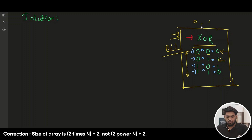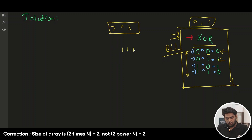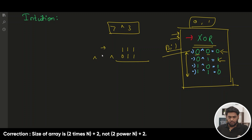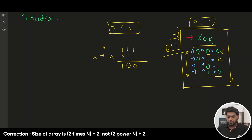Whenever you have same numbers it is actually 0, and whenever you have different numbers it is 1. We are talking in terms of bits. For example, if we have 7 and 3 — 7 is represented as 1, 1, 1 and 3 is represented as 0, 1, 1. When we perform XOR using the caret symbol, same bits give 0 and different bits give 1. So 1,1 is 0, 1,1 is 0 and 1,0 is 1 because the values are different.